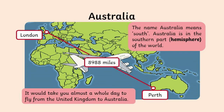You've already had a look at the map of the world and seen where the UK and Australia are. If you look closely at this one, we can actually see the difference. London to Australia is 8,988 miles, and it would take you pretty much a whole day to fly from the UK to Australia. Australia is located in the southern part of our world, in the Southern Hemisphere.